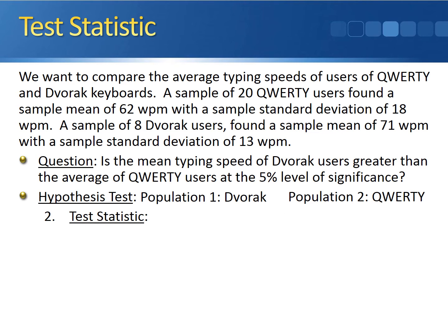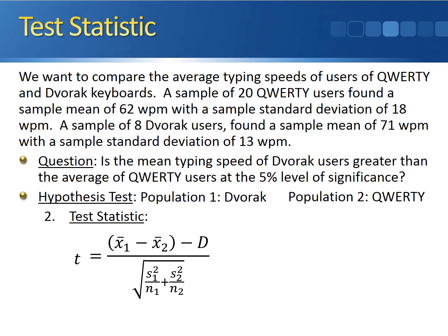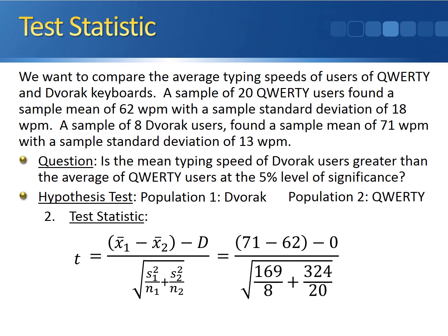Step 2 is to calculate the test statistic. We know the test statistic follows a t-distribution. We calculate it by taking x1 bar minus x2 bar minus d, divided by the square root of the sample variance from each sample divided by its sample size. Plugging in: 71 minus 62 minus 0 in the numerator, and the square root of 169 divided by 8 plus 324 divided by 20 in the denominator, which gives us a final test statistic of 1.473.